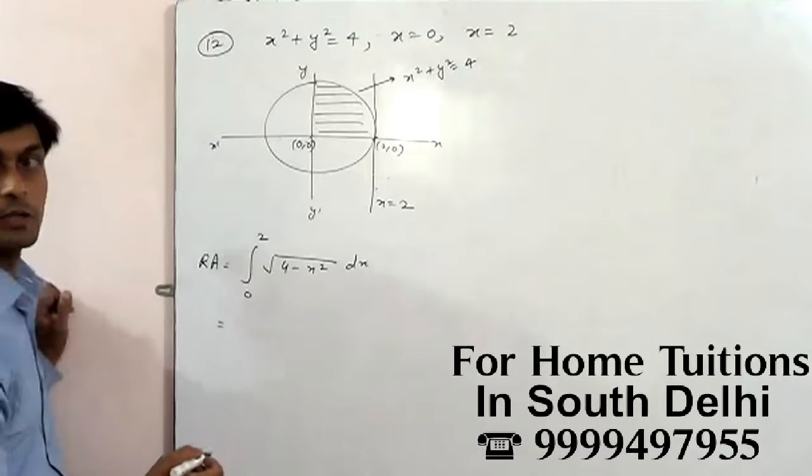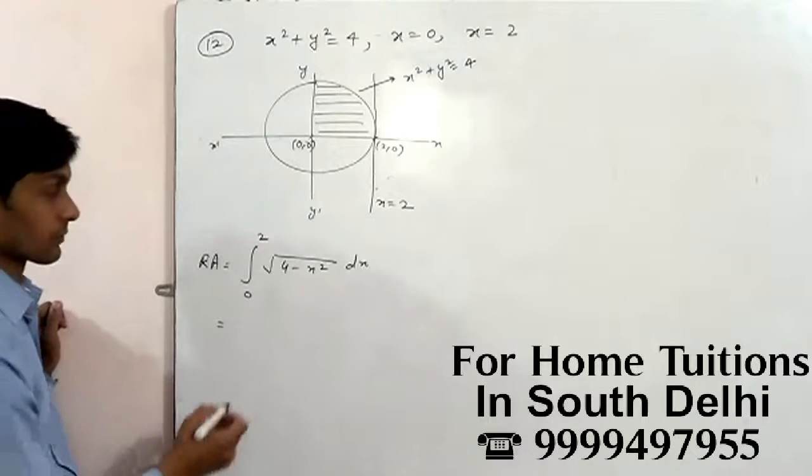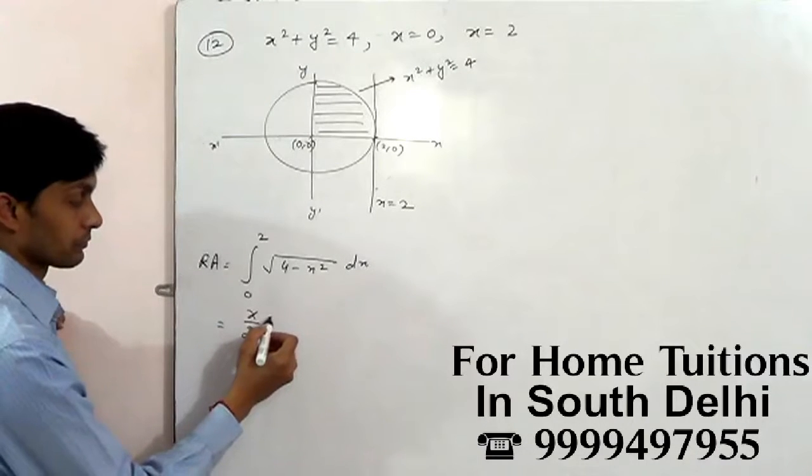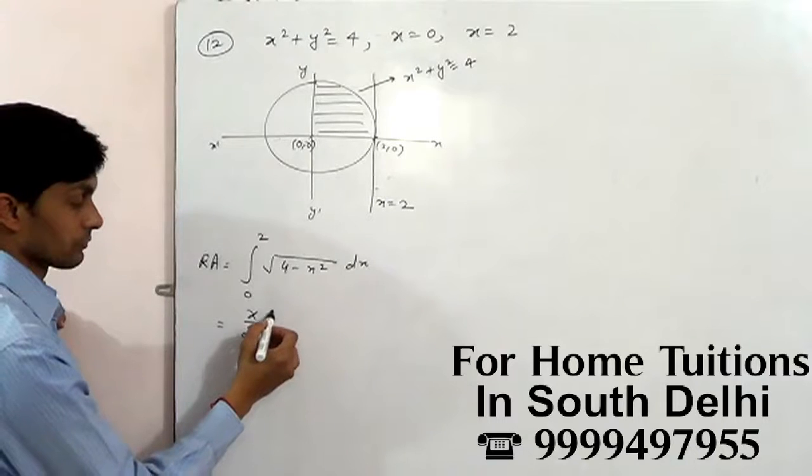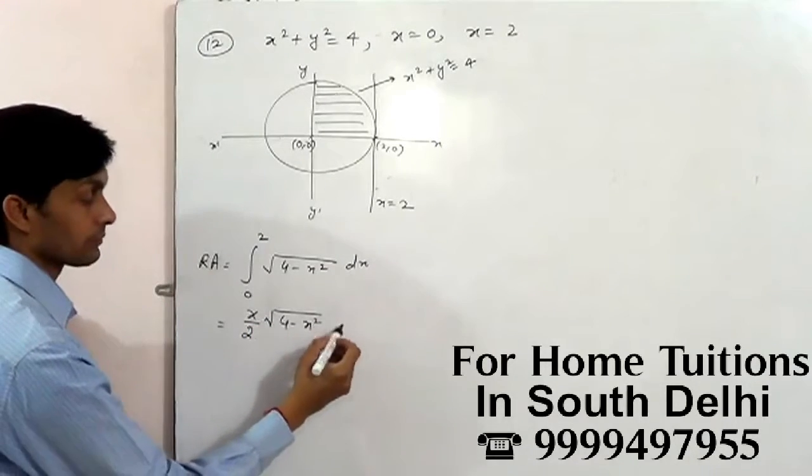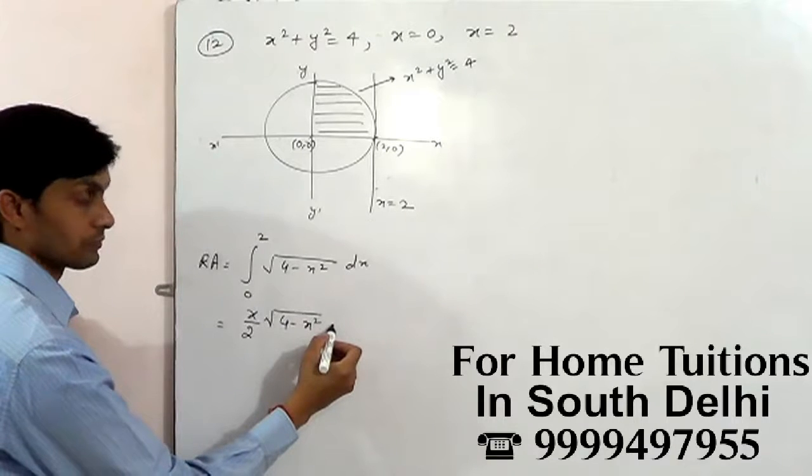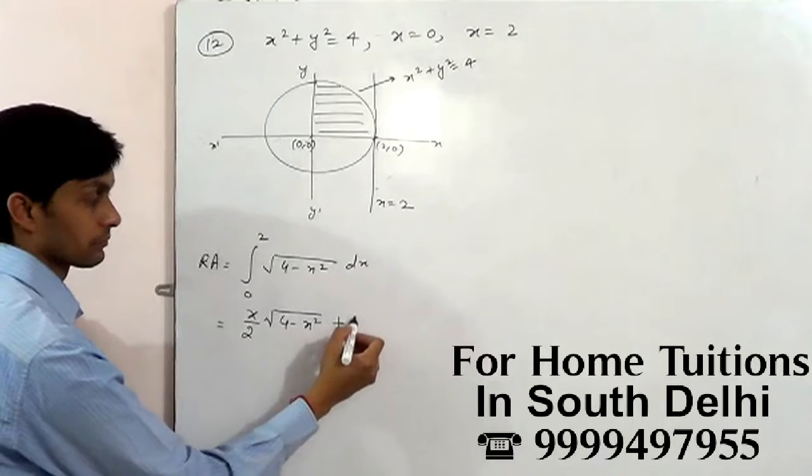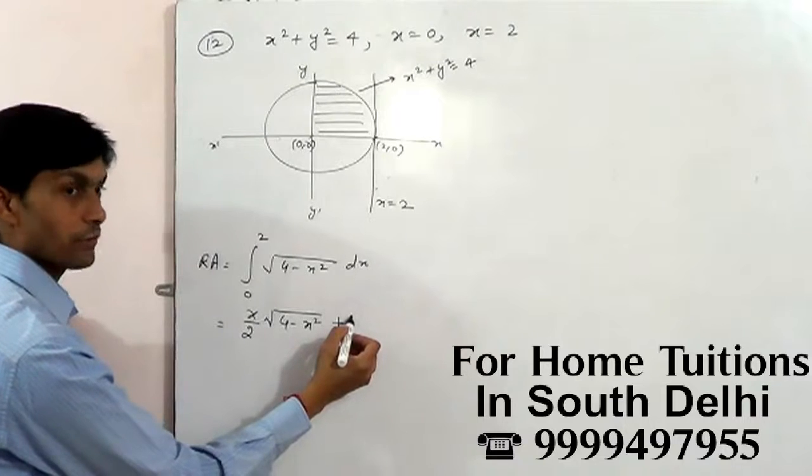x by 2, root 4 minus x square plus x square is 4.